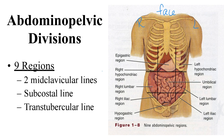Starting on the right is the hypochondriac area. Hypo means below, and chondro refers to cartilage or ribs — the ribs on the bottom are made of cartilage — so the right hypochondriac region is below those ribs on the right side. In the middle of the top row is the epigastric region: epi means above and gastric means stomach, so this area is right on top of the stomach. Then we have the left hypochondriac area on the left side, below those cartilage ribs.